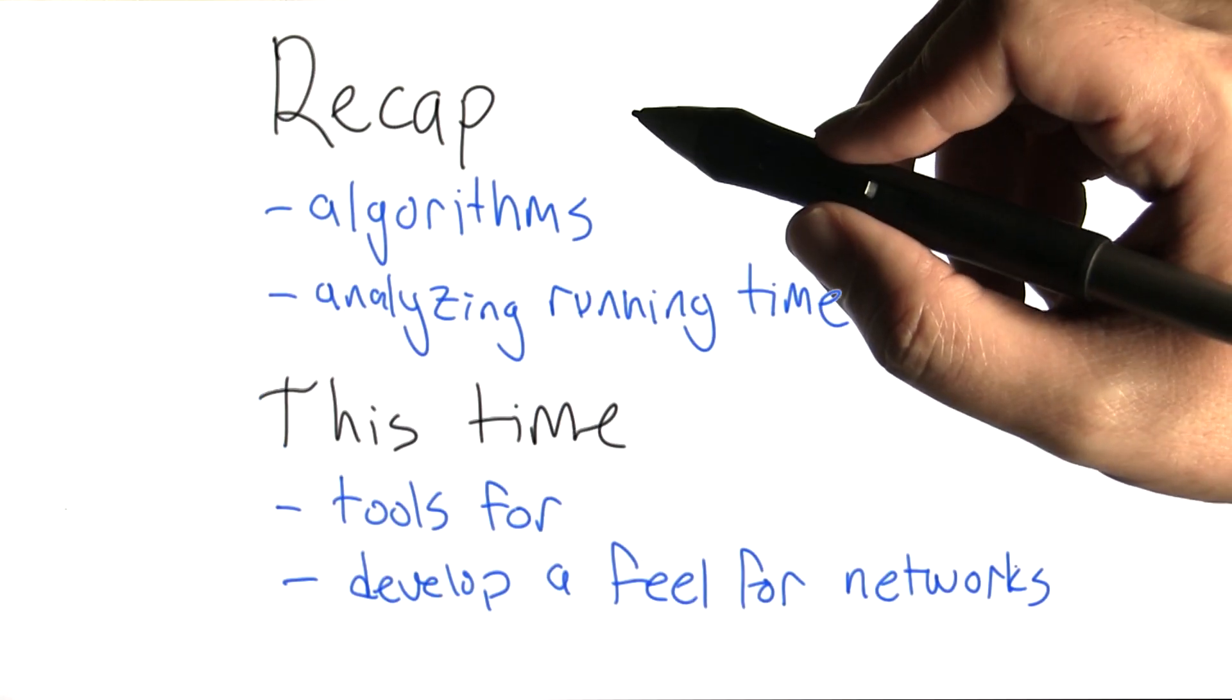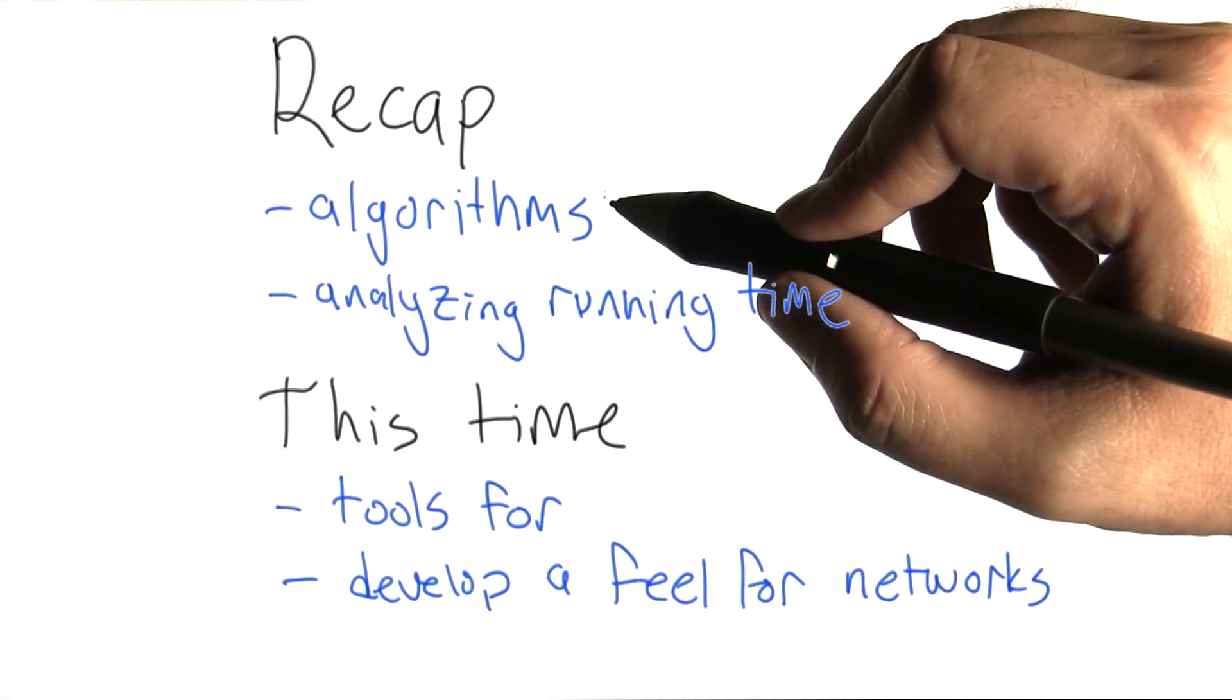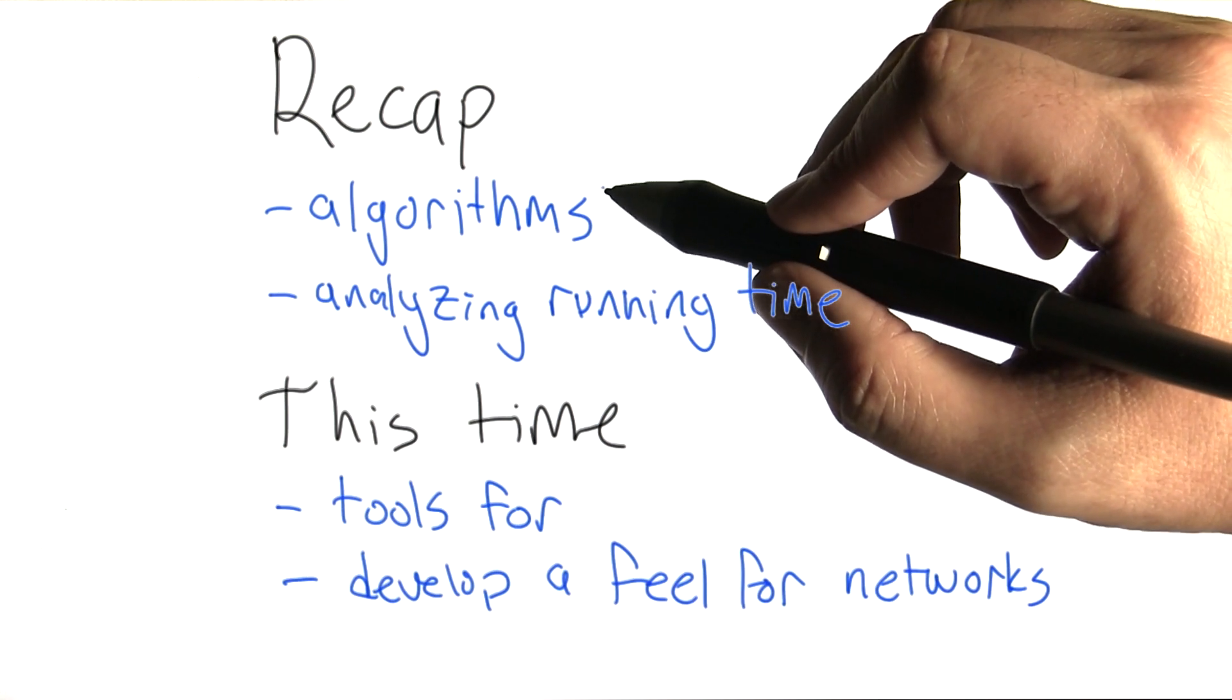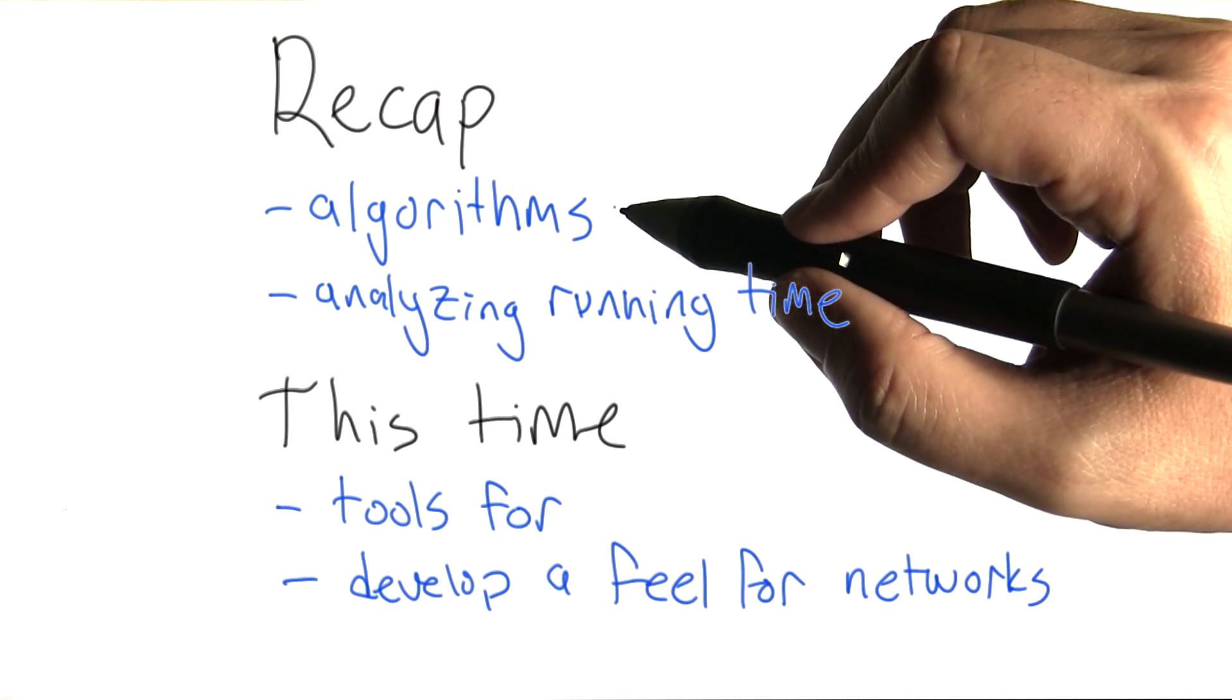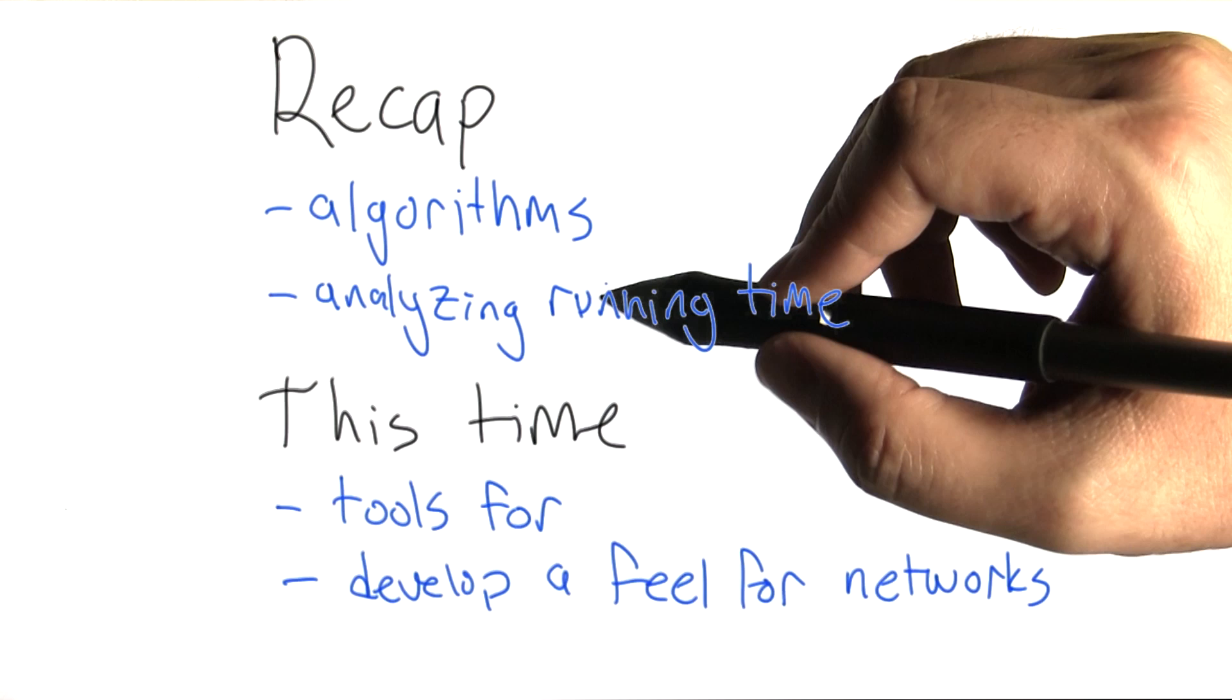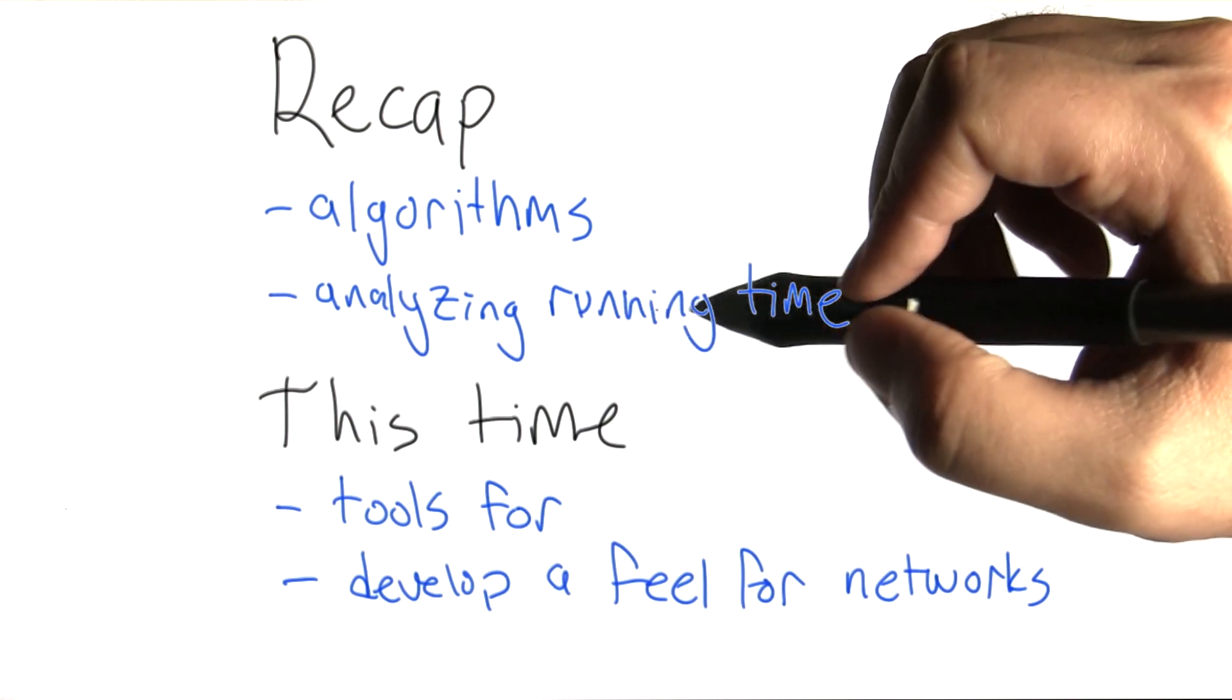So last time, what we talked about was an introduction to the idea of an algorithm and how different algorithms can let you do different things fast or slow. And I started talking a little bit about analyzing the running time of algorithms.